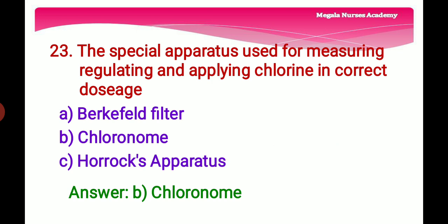Twenty-third question: The special apparatus used for measuring, regulating, and applying chlorine in correct dosage — Option A: Berkefeld filter, a water filter made of diatomaceous earth used at home for water purification. Option B: Chloronome, part of the chlorination system used to introduce chlorine into water supply. Option C: Horax apparatus, used to find the dose of bleaching powder required for water disinfection. The right answer is Option B, chloronome.